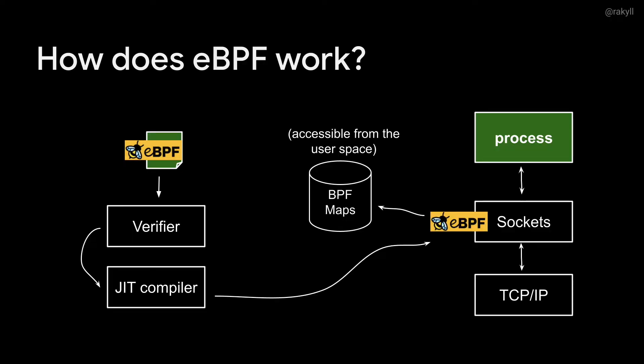eBPF is a very flexible mechanism that allows you to hook into user and kernel space to collect events of your interest. By using eBPF, you can hand off a program written in C from user space and attach it to certain places — in this example, I'm going to diagnose networking events. eBPF programs can mutate data structures called BPF maps and allow user space programs to read that collected data. You can then take the data out and process and export it as metrics, logs, events, or traces.